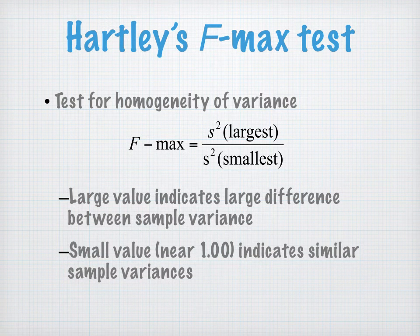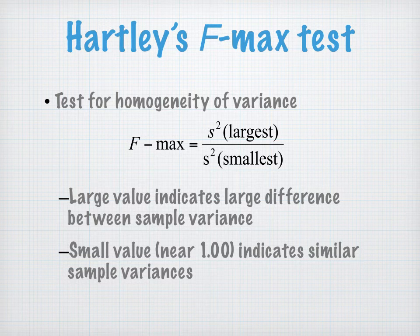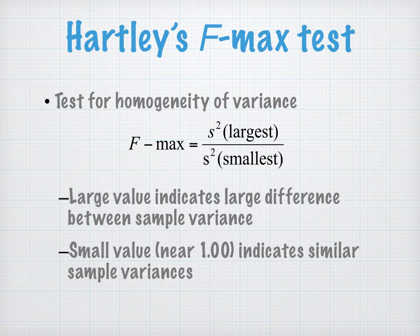The other thing we need to talk about is Hartley's Fmax test. One of the stipulations for doing a T-test for independent means is that we have homogeneity of variance — a fancy way of saying, are these variances the same? To calculate Fmax, we take the two separate variances: the sums of squares for group one divided by the degrees of freedom for group one, and the sums of squares for group two divided by the degrees of freedom for group two. Whichever value is largest goes on top, and whichever is smallest goes on the bottom.